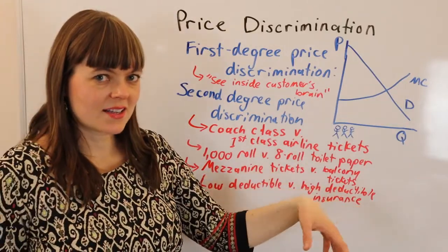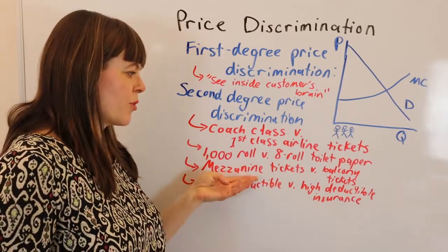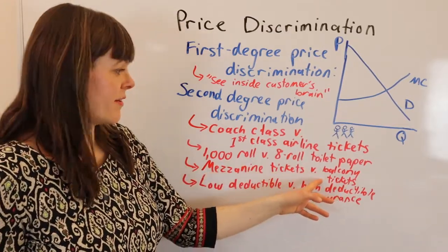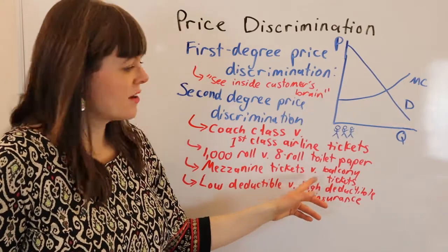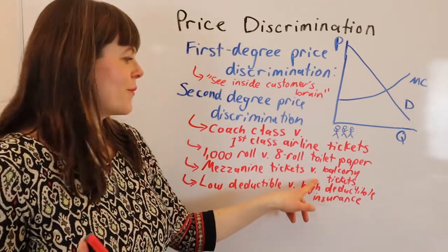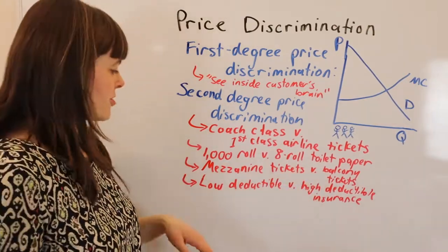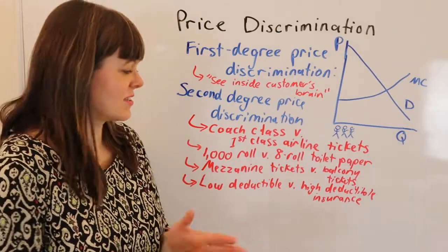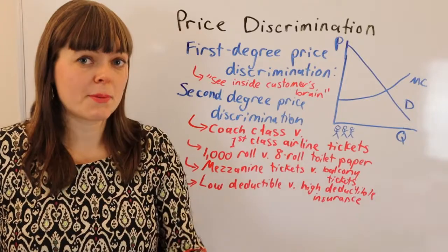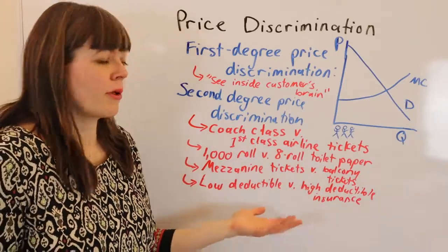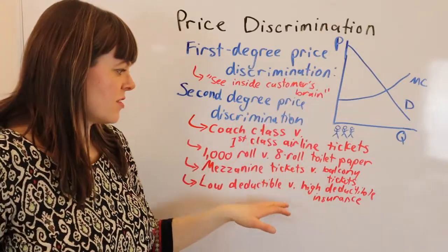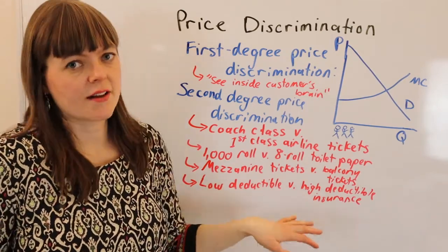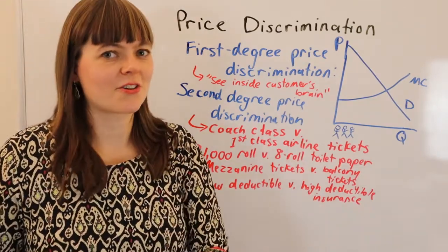So you're trying to price discriminate based on quality or quantity of the product. Mezzanine tickets get a lot of money from those willing to pay, while balcony tickets make the product available at lower quality to college students who buy cheap. Low deductible versus high deductible insurance separates sick people from healthy people — sick people drive up the cost of health insurance. This gets into adverse selection, which we'll cover another time. All of these are examples of second degree price discrimination.